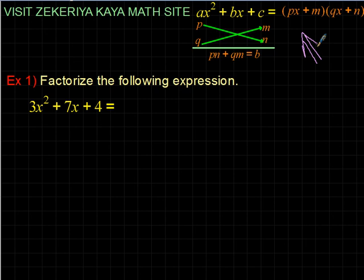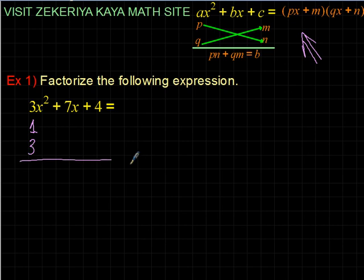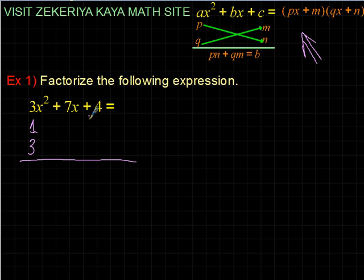Let's see it with an example. I copy the formula here so you can always see it. For the number 3, I have only one choice: one times three. For the number 4, we need two numbers whose product is 4. The midterm is positive, so I can keep both numbers positive because when I multiply and add, the result should be positive.